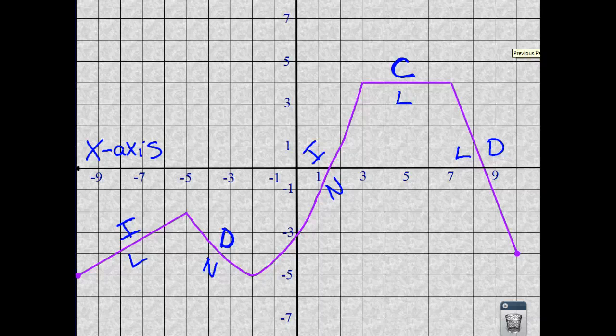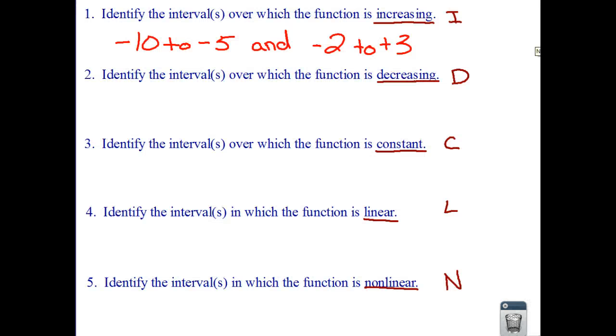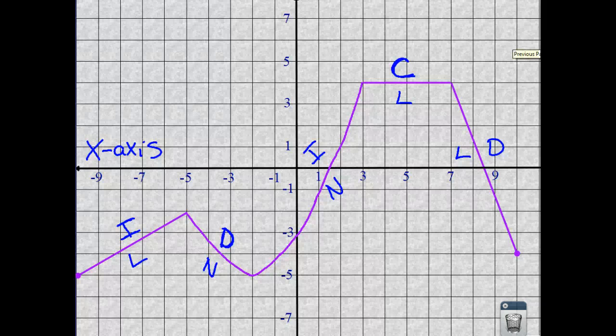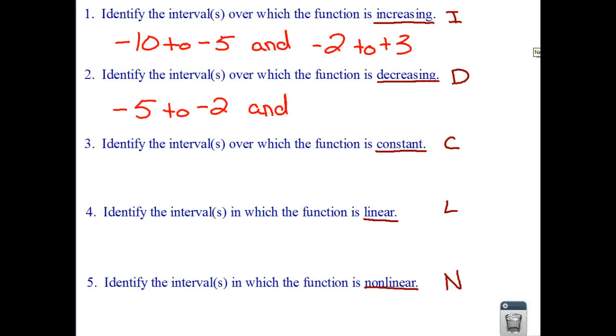Now let's go look at the decreasing portions of this graph. So we have decreasing from negative 5 all the way to negative 2. And I believe we had another one. Decreasing was the last one. So it was from positive 7 all the way to positive 10 on the x-axis.